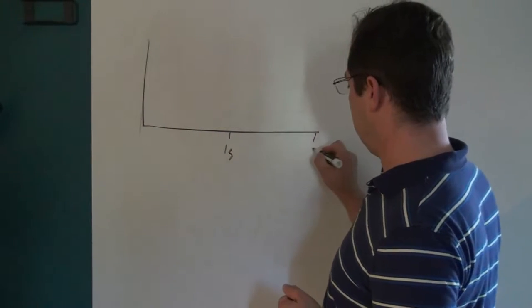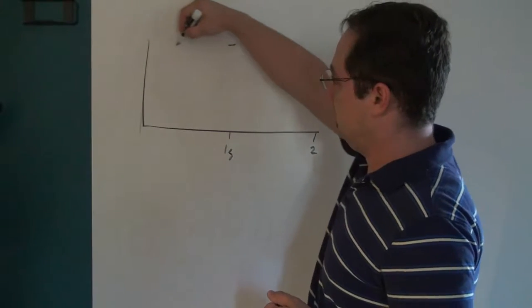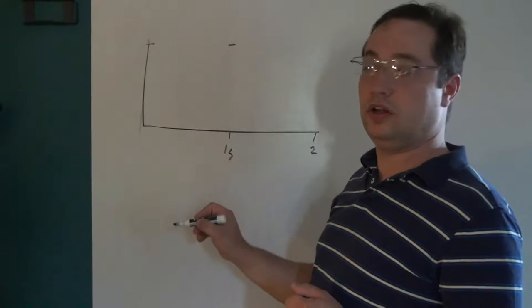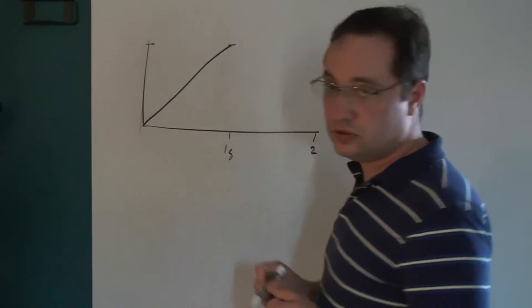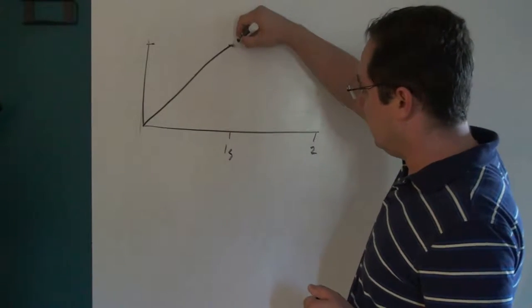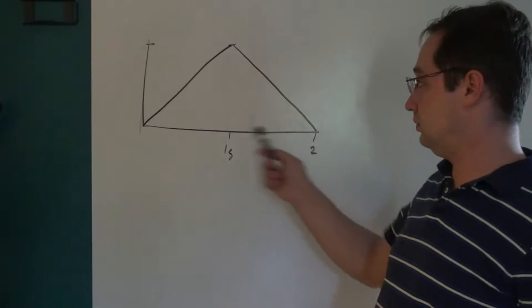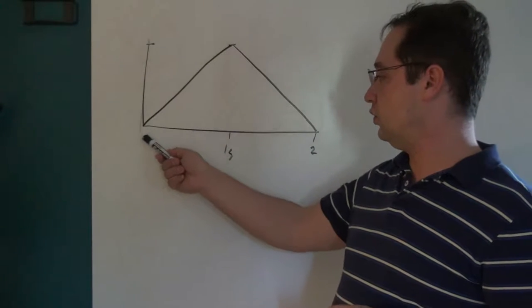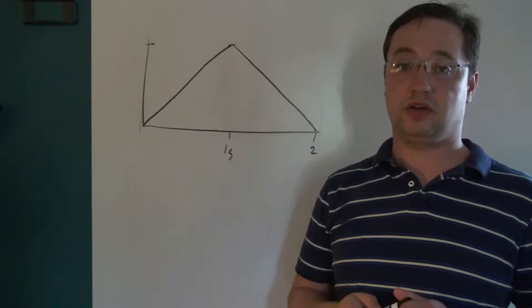This is one second, this is two seconds. So right here would be the brightest level of the LED. And the LED in a linear fashion would first go from off to on, and then from on back to off.